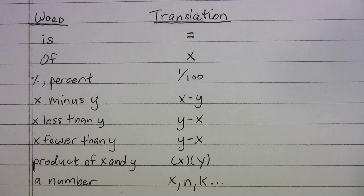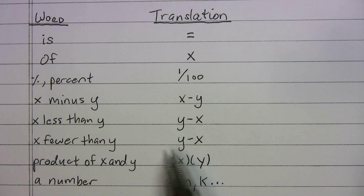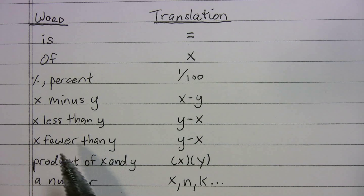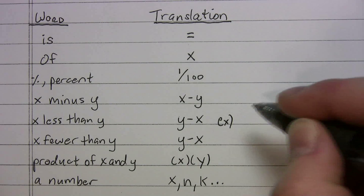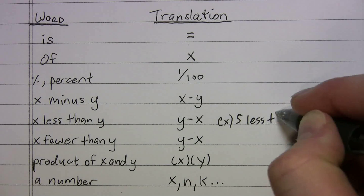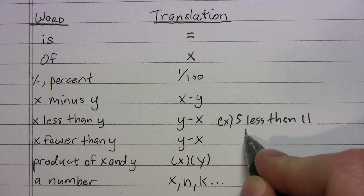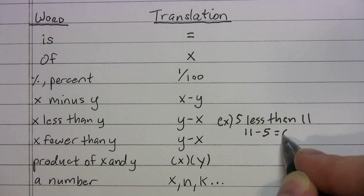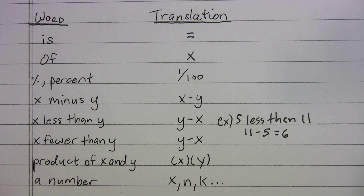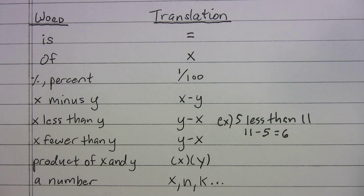'X minus Y' is just X minus Y. 'X less than Y' and 'X fewer than Y' are a little bit trickier — when you see 'less than' or 'fewer than,' you have to flip the order. So 'X less than Y' becomes Y minus X, and 'X fewer than Y' becomes Y minus X. For example, 'five less than 11' is 11 minus 5, which equals 6. When it says 'product of,' you put the things you're multiplying in a double bubble, so 'product of X and Y' is just X times Y.